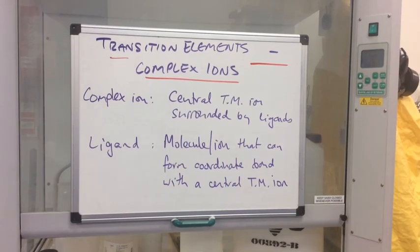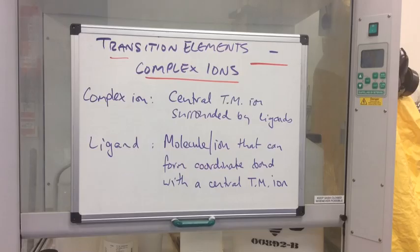In this video I'm going to focus on the aspect of transition elements that deals with complex ions. Remember, one of the four general properties of the transition elements is their ability to form complex ions. A complex ion is a central transition metal ion surrounded by ligands. A ligand is a molecule or an ion that can form coordinate bonds or dative covalent bonds with a central transition metal ion.